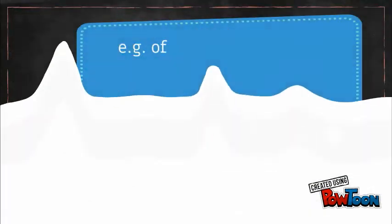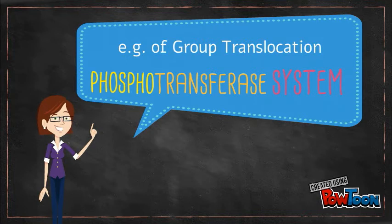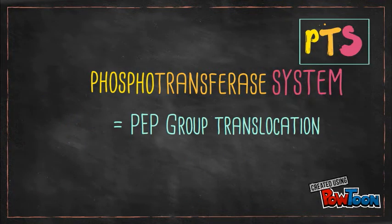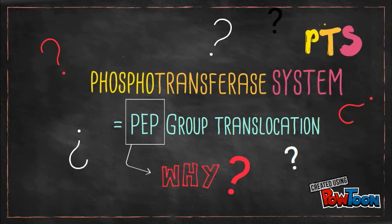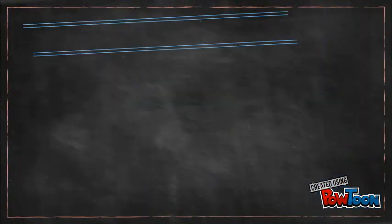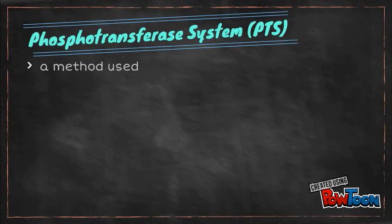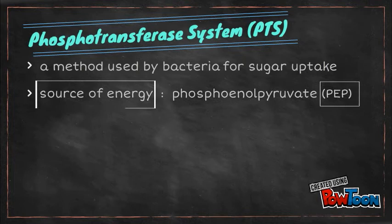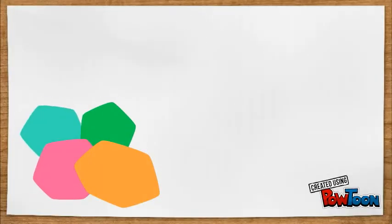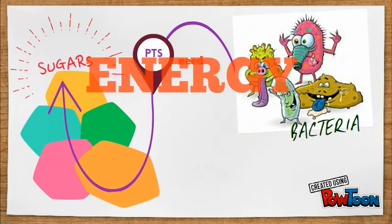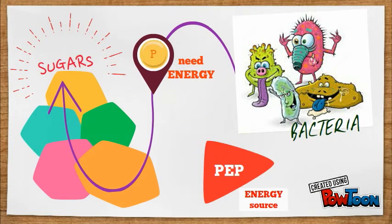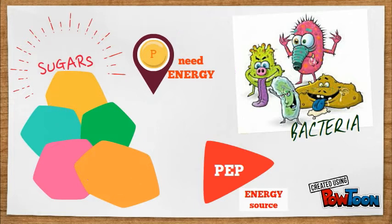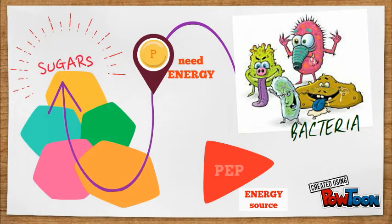Now we are going to talk about an example of group translocation which is the phosphotransferase system, PTS, or PEP group translocation. It is a distinct method used by bacteria for sugar uptake where the source of energy is from phosphoenolpyruvate, PEP. The phosphate group from the high-energy PEP compound is transferred to the phosphoryl transfer proteins in PTS, then broken down to form pyruvate.